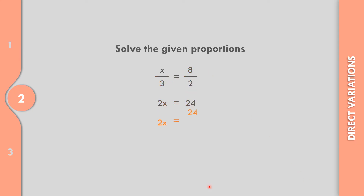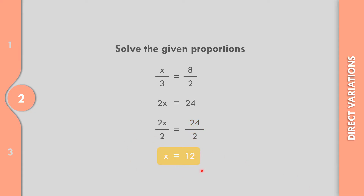Afterwards, let us divide both sides with the numerical coefficient of x, so that is 2. Cancel 2 and then 2, that is equal to 1. So x is equal to 24 divided by 2, that is equal to 12. So x equals 12.